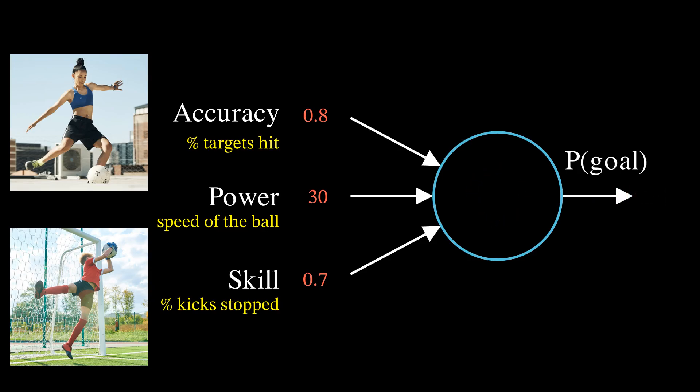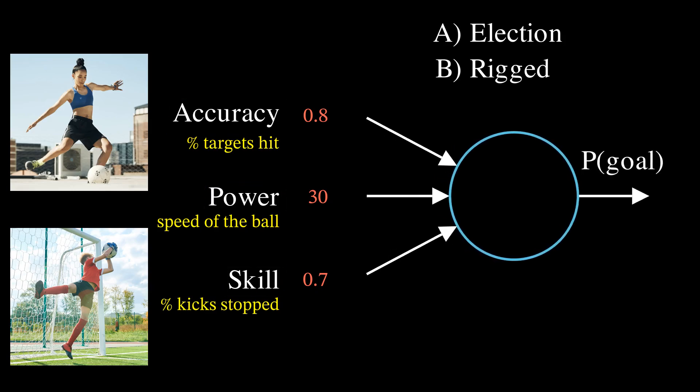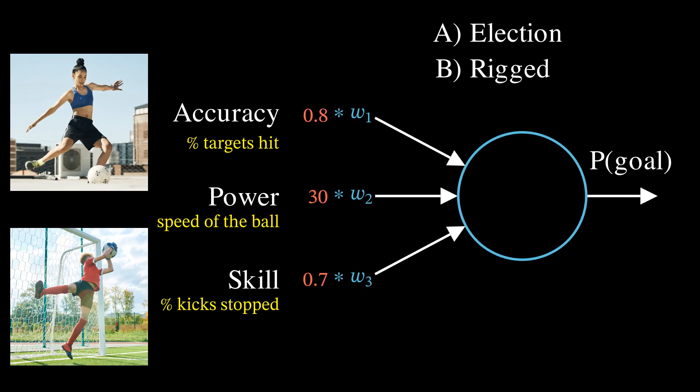Remember that I promised two things. A: That a neuron can be seen as an election. And B: That it is rigged. A follows from the fact that each input makes a contribution to the final result. You can say that each input gets to vote. But we can't treat each input equally. For example, it could be that accuracy is more important than power, and the skill of the goalkeeper has even a negative effect. So instead, we scale each input by a number, which you can think of as its relative importance. This is why the election inside of a neuron is unfair. Inputs don't get equal voting rights. The scaling factors are usually called weights.